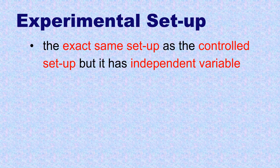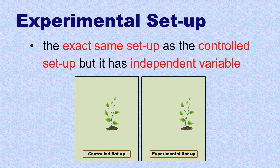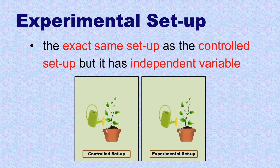The Experimental Setup is the exact same setup as the Controlled Setup, but it has an independent variable. For example, these two setups have the same species of plant with the same size, health, and age, the same type and amount of soil, the same pot, and the same amount of water at the same schedule of watering.